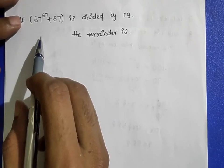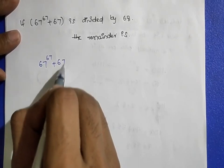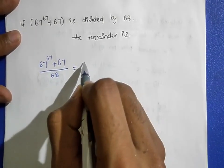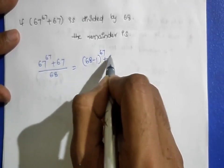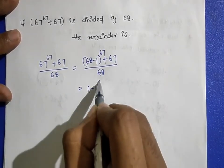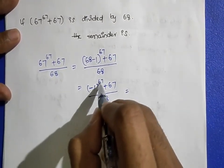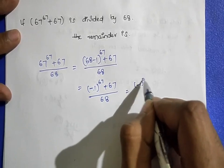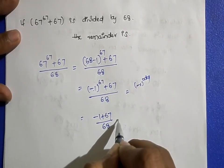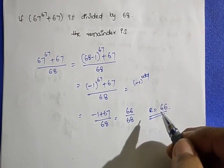Next question: 67 power 67 plus 67 is divided by 68. Write 67 as (68 − 1), so (68 − 1)^67 + 67, divided by 68. This gives (−1)^67 + 67. Since 67 is odd, (−1)^odd = −1. So −1 + 67 = 66. The remainder is 66.